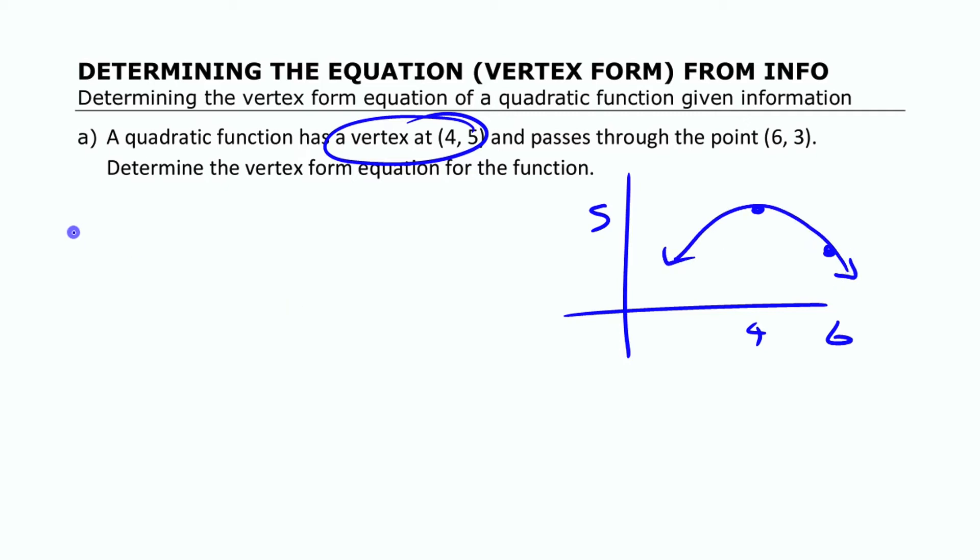I'm just going to start with my basic vertex form here and fill in whatever I can fill in from the information. If I know the vertex is 4, 5, I can fill in two numbers right away. I can say that this is x minus 4, because it's 4 to the right, and this is plus 5.